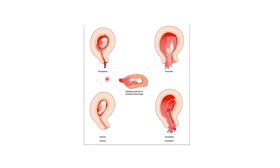This picture shows the various types of abortion. In threatened abortion, there will be bleeding but the products of conception are retained and there will be no cervical dilatation. Only one-fourth of these cases will lead to actual miscarriage. In inevitable abortion, there is cervical dilatation and bleeding but the products of conception are not passed — this will definitely lead to miscarriage. This picture also shows the expelled products of complete miscarriage, and missed abortion where the fetus or embryo is dead for long but there will be no passage of products of conception until bleeding starts.